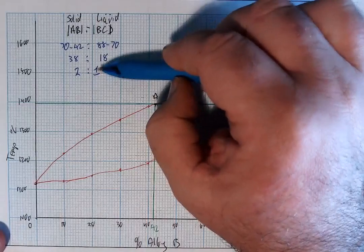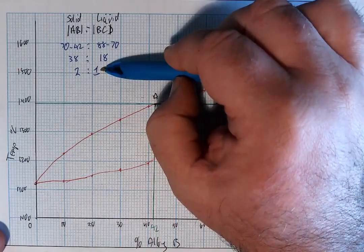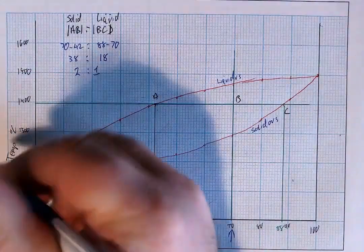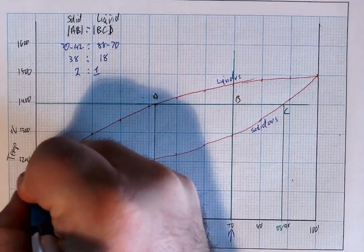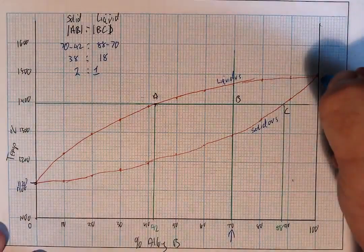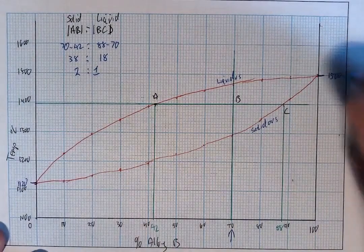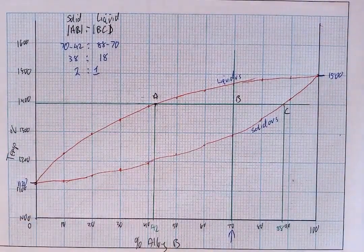Now the last part of this question is simplicity itself. The melting point for metal A and the melting point for metal B. The melting point for metal A is this point here which we know is 1500.